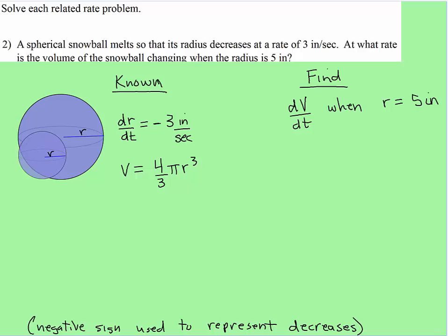Okay, here we have a little bit of a different situation in that we have something shrinking. And when you have a rate that's shrinking, typically you're going to use the negative sign to show something shrinking, a rate that's decreasing.